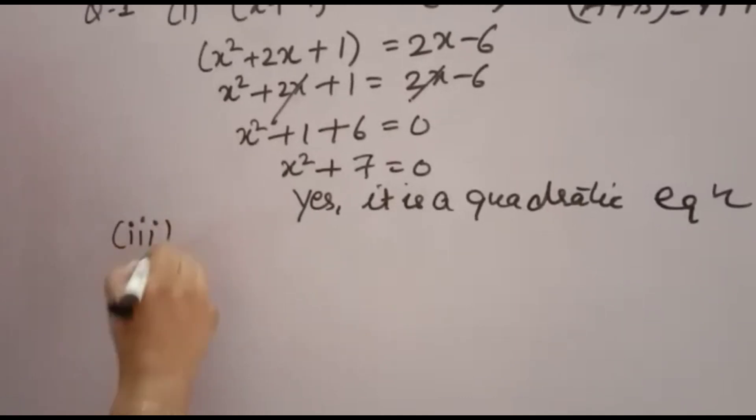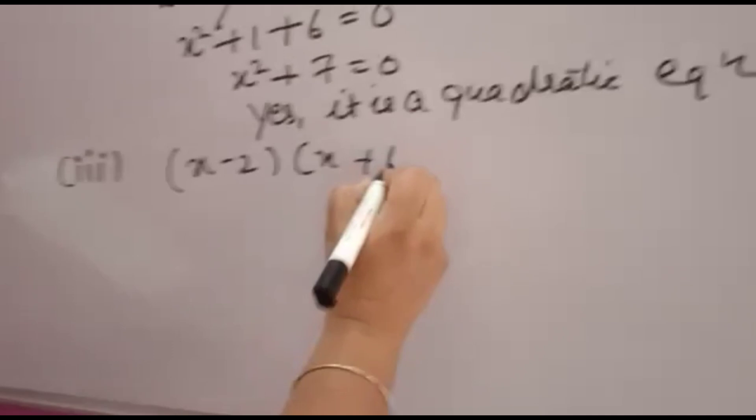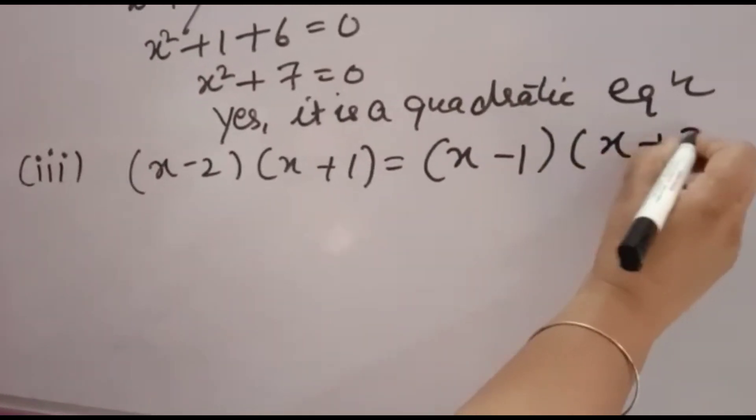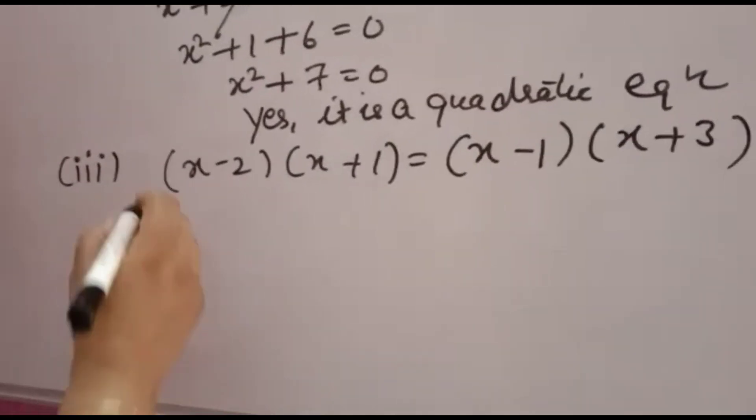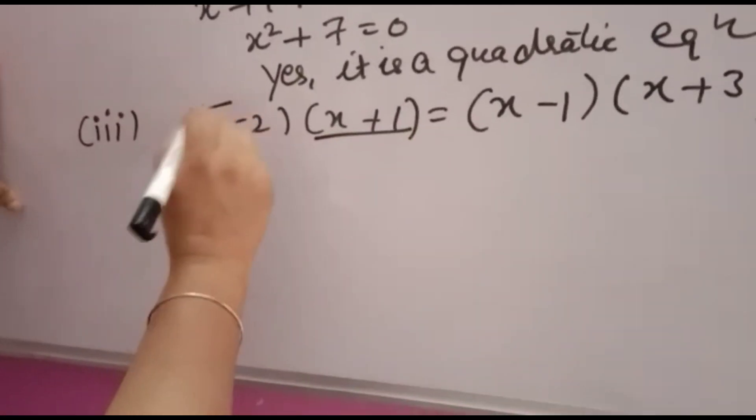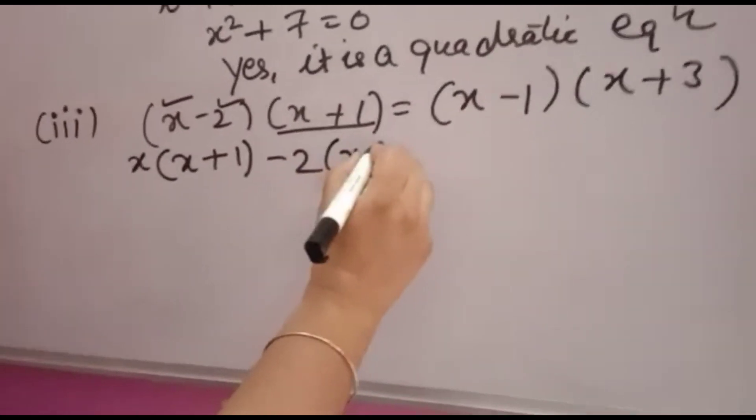Now second part you have to do yourself. Third part I am telling. Third part is (x-2) into (x+1) equal to (x-1) into (x+3). Now this you have to solve. So for solving these, firstly x will be multiplied by this full term, x plus 1. Then minus 2 will be multiplied by this full term.